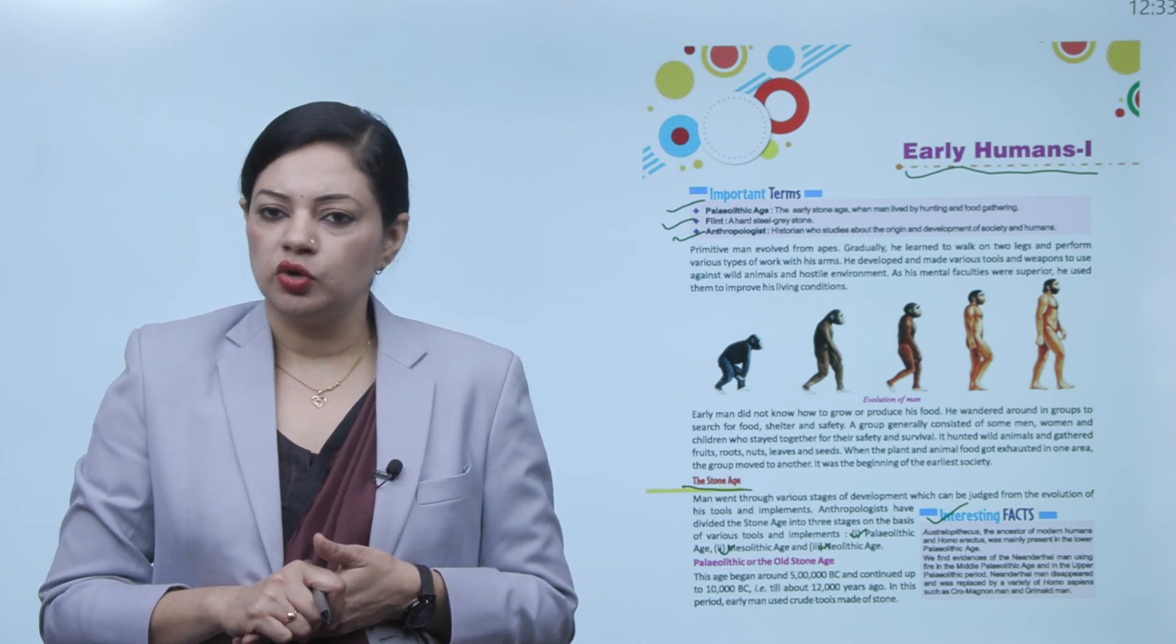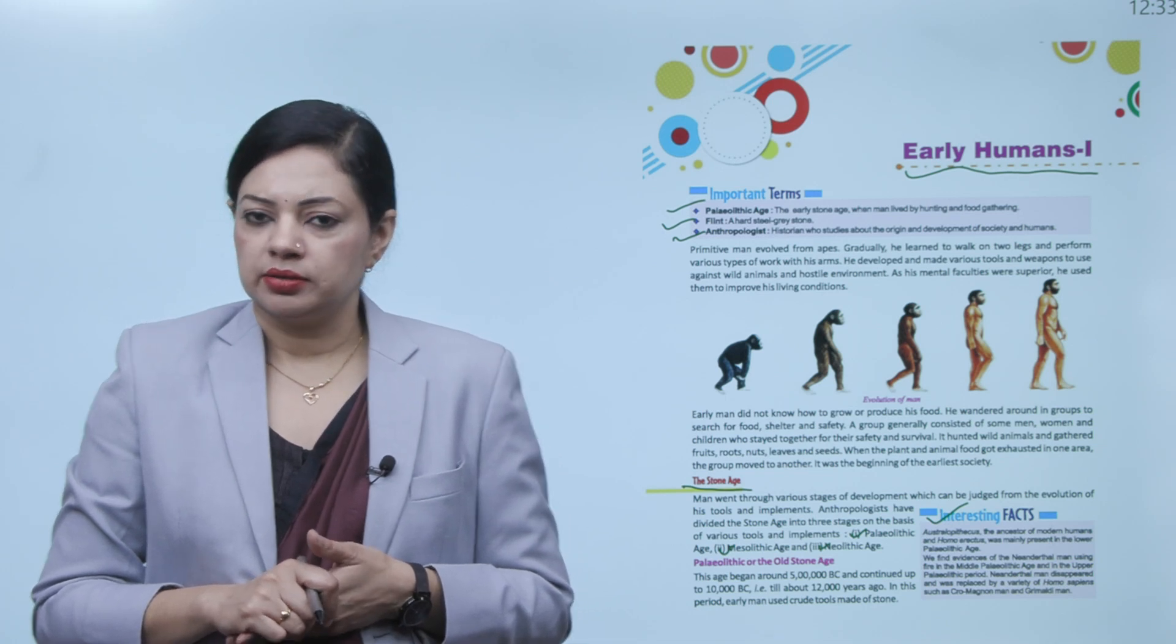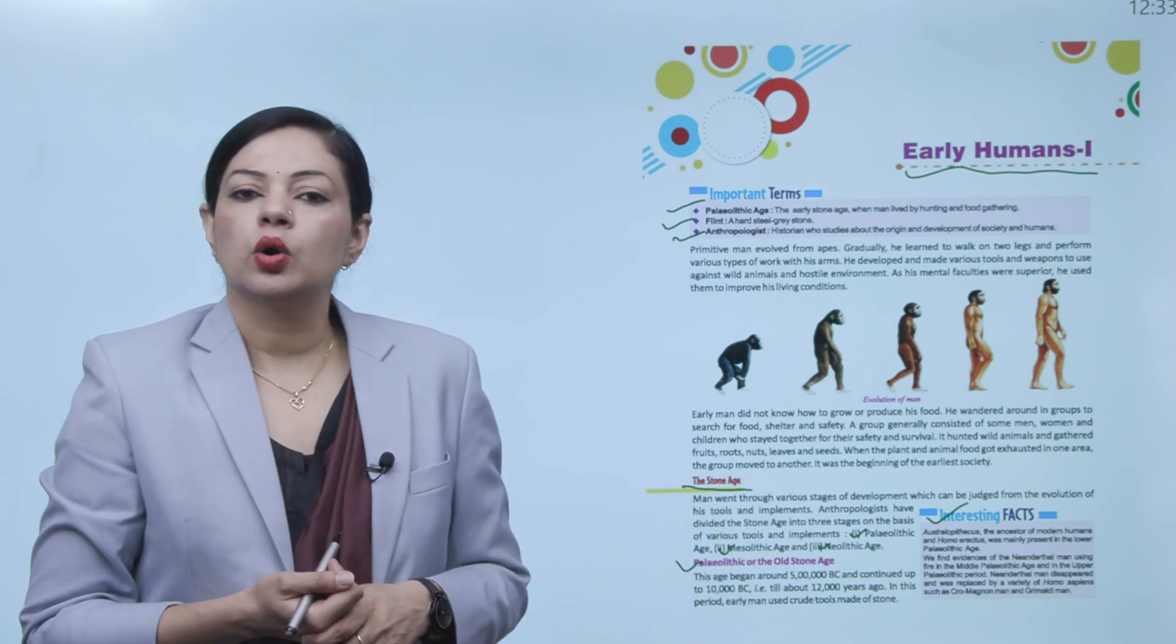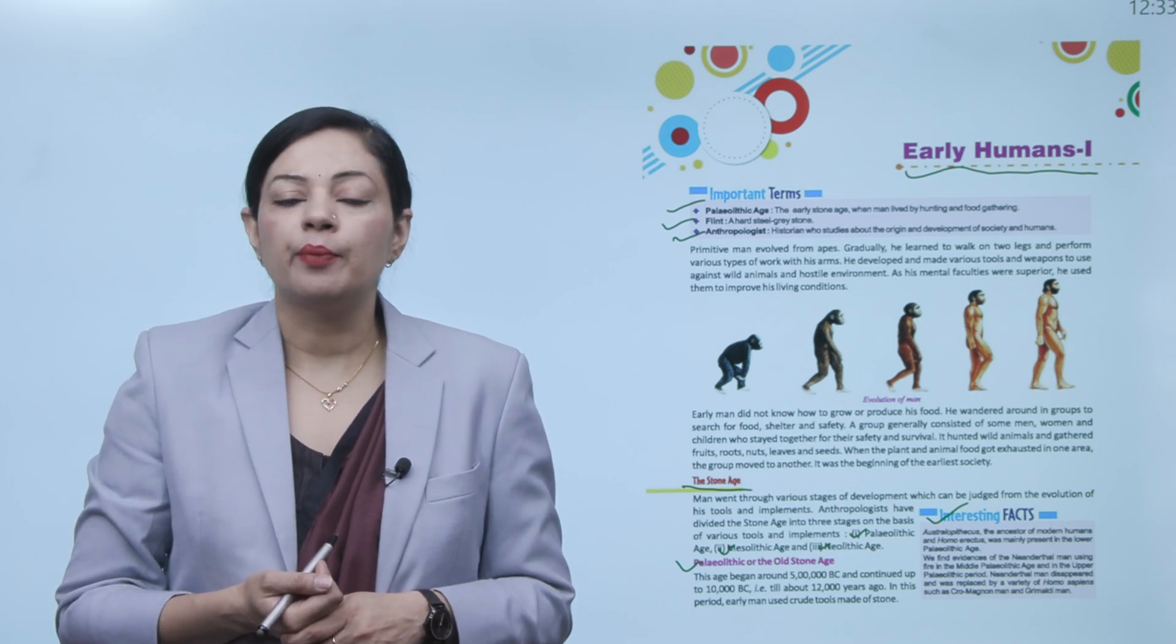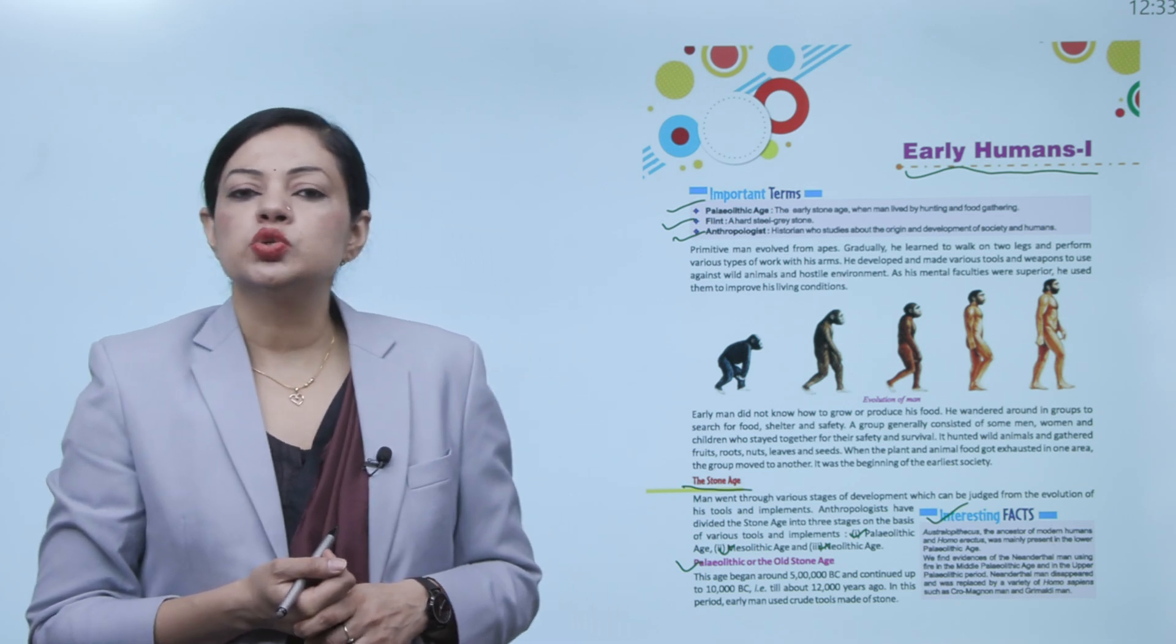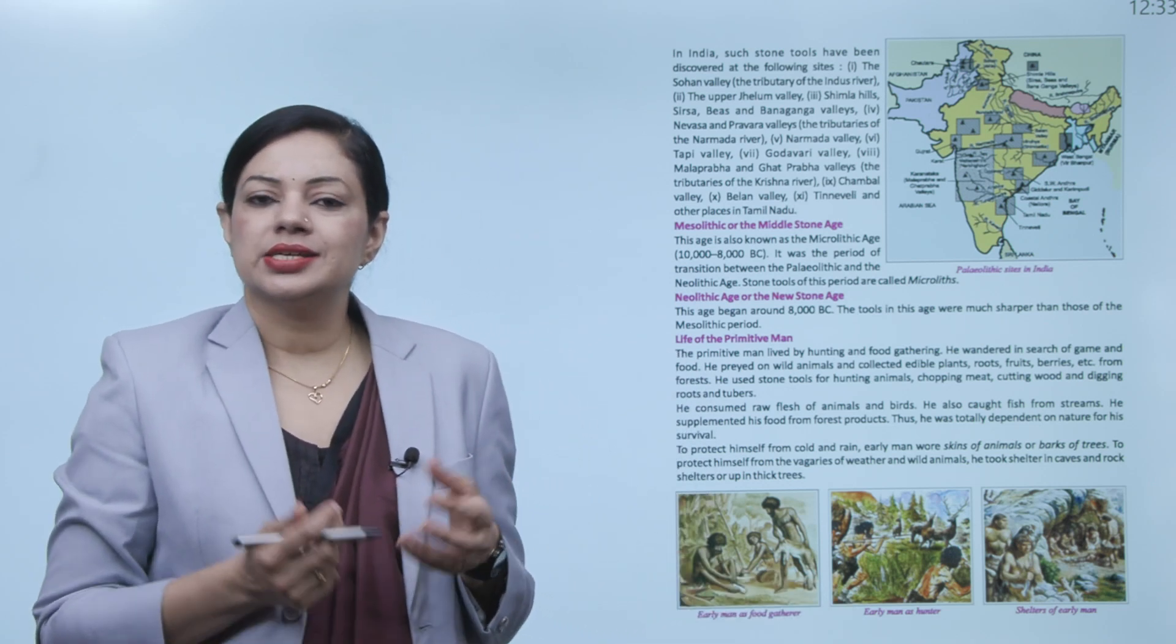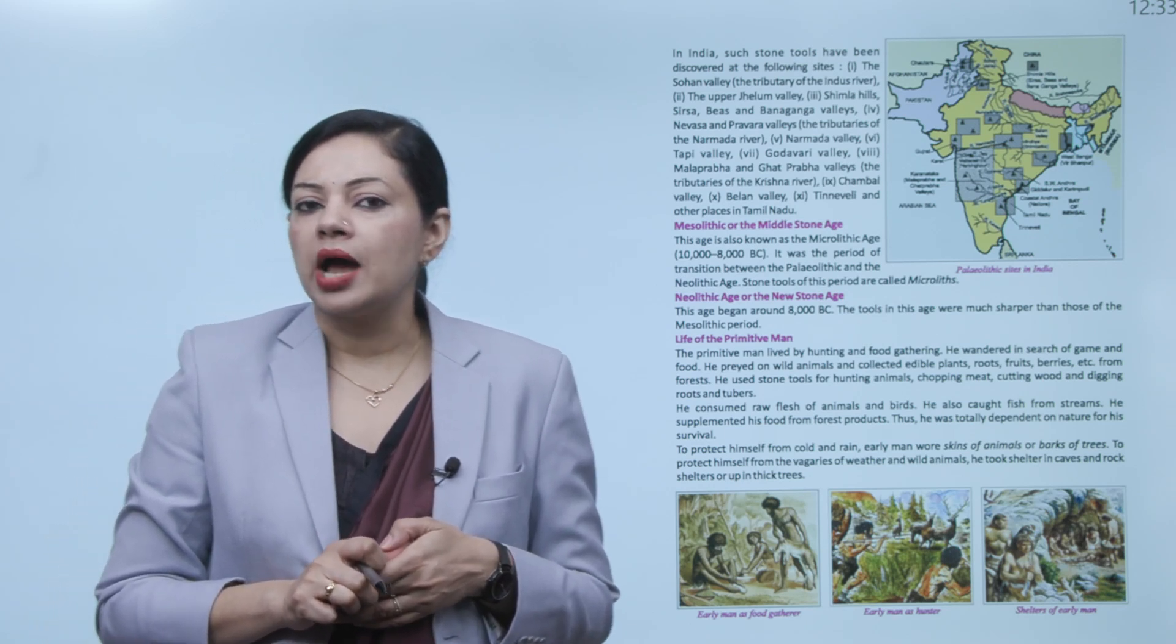We find evidence of the Neanderthal man using fire in the middle Paleolithic age, and in the upper Paleolithic period Neanderthal man disappeared and was replaced by varieties of Homo sapiens such as Cro-Magnon man and Grimaldi man. Now first we will read about Paleolithic or we can say the Old Stone Age. This age began around 50,000 BC and continued up to 10,000 BC, that is about 12,000 years ago. In this period early man used crude tools made of stone.